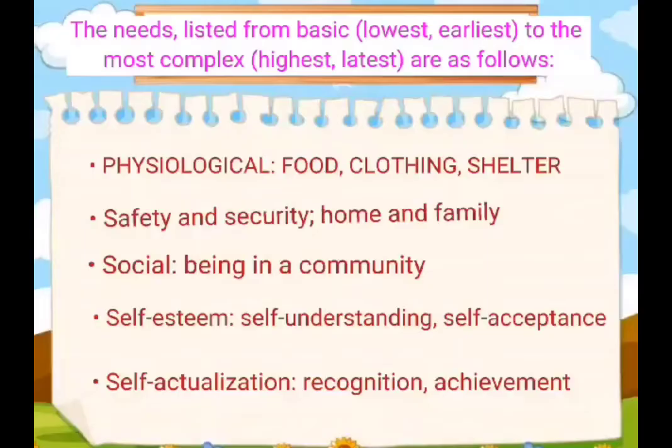Proceeding to Maslow's needs listed from basic to complex: physiological needs include food, clothing, and shelter; safety and security needs include home and family; social needs include being in a community; self-esteem needs include self-understanding and self-acceptance; and self-actualization needs include recognition and achievements.